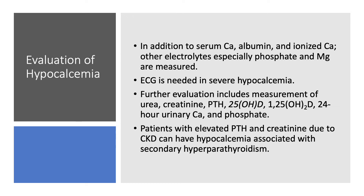To determine the etiology, check kidney function — CKD is associated with secondary hyperparathyroidism. PTH is critically important because it differentiates PTH-lowering causes like hypoparathyroidism from other causes that raise PTH. Check 25-hydroxyvitamin D, as it's a common cause. 1,25-dihydroxyvitamin D is not commonly checked — it's expensive, takes time, and in hypocalcemia in particular we don't check it. 24-hour urine calcium and phosphate are occasionally checked. Patients with elevated PTH and elevated creatinine due to CKD can have hypocalcemia due to secondary hyperparathyroidism.